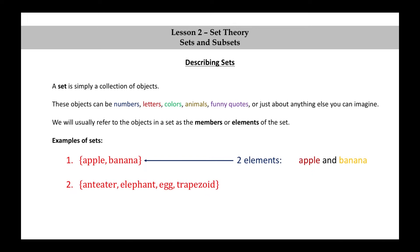How about the set consisting of anteater, elephant, egg, and trapezoid? This set has four elements: anteater, elephant, egg, and trapezoid.